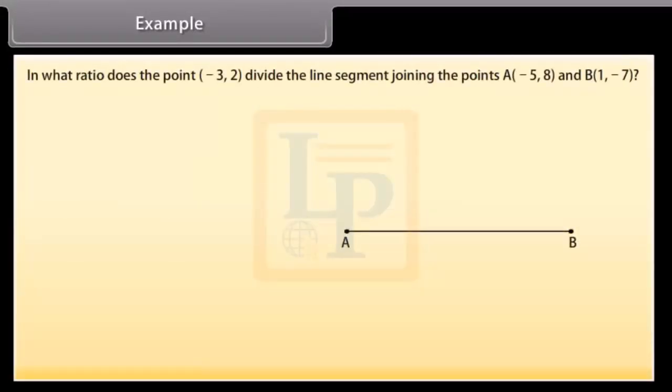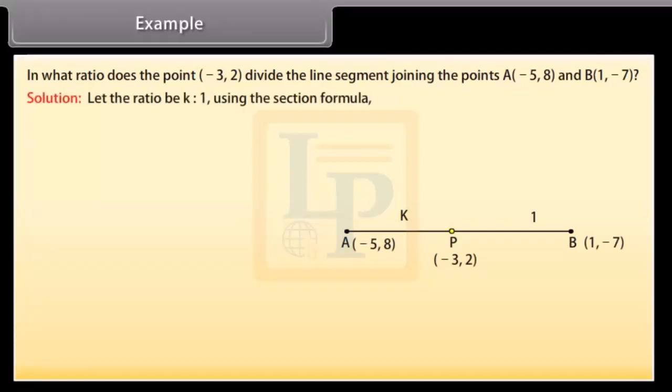Example. In what ratio does the point (minus 3, minus 3) divide the line segment joining the points A(minus 5, 8) and B(1, minus 7)? Solution. Let the ratio be K is to 1. Using the section formula, minus 3, 2 is equal to K minus 5 by K plus 1, minus 7K plus 8 by K plus 1.